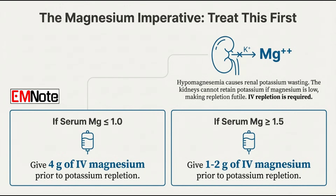If we find hypomagnesemia, oral magnesium tablets are absolutely not enough in this acute setting — absorption is too slow and unreliable. You have to give intravenous magnesium to shut down that wasting mechanism quickly. The protocol is stratified: if the serum magnesium is 1.0 or less, you must give 4 grams of IV magnesium before you even start the potassium. If it's 1.5 or higher but still a concern, give 1 to 2 grams of IV magnesium first. The principle is always the same: fix magnesium first, stop the wasting, then fix the potassium.